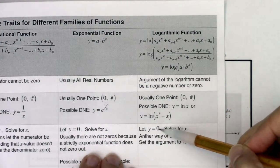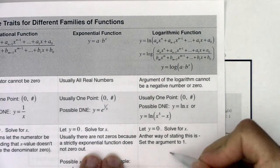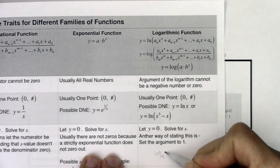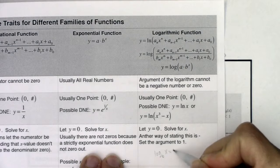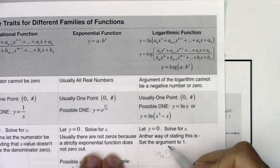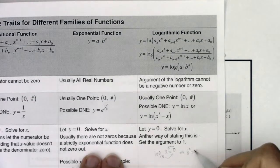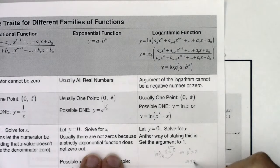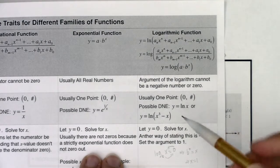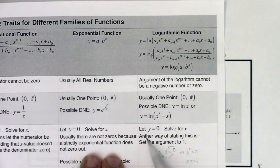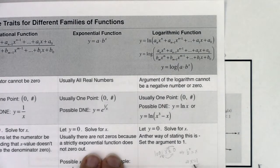For the x-intercept, you let y equal zero. So I'm asking: when is log base b of x equal to zero? If I change this into its equivalent exponential form, I get b to the zero equaling x, which tells me when x equals one. So another way of looking for x-intercepts is to figure out when your argument equals one — whenever your argument equals one, the exponent will be zero and that gives you an x-intercept.